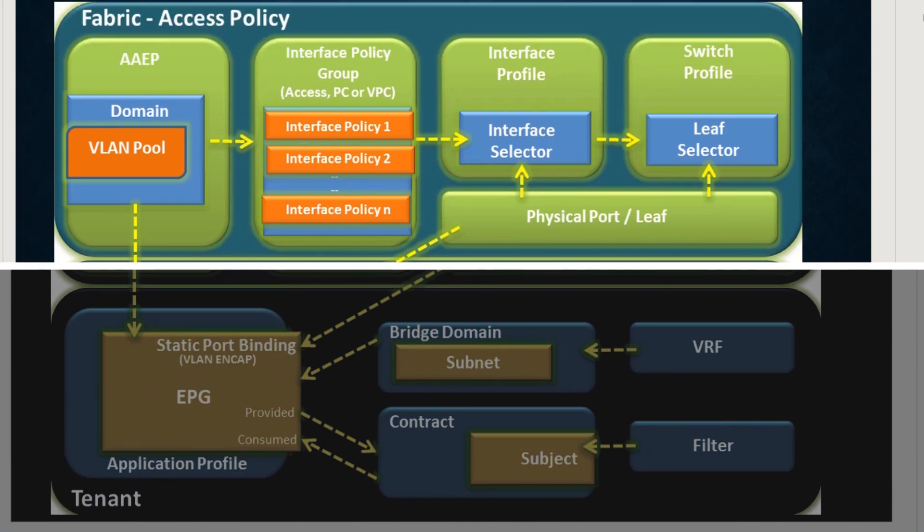Under the fabric access policy there are four blocks. The first block contains VLAN domain and AEP policy. The second block contains interface policy group (IPG), wherein leaf port policy enables you to specify port parameters. The third block has interface profile, used to display interfaces included in the leaf profile. The last block is switch profile, which displays the association between switches and policy groups.